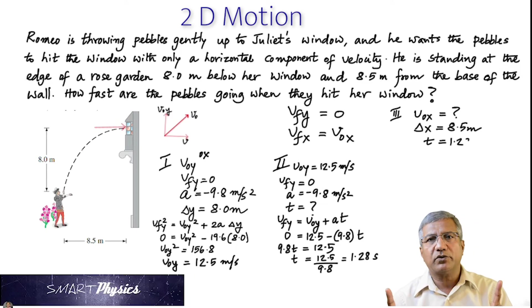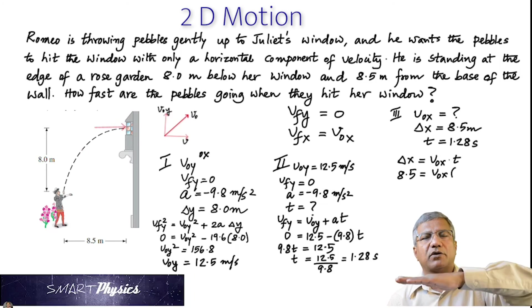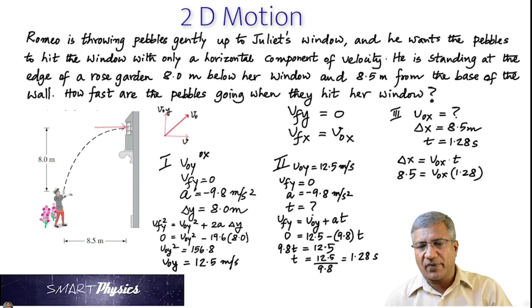And we know that it has to move 8.5 meters along the X because that's how far away Romeo is. So delta X is V0X multiplied by time. Remember, we're using this formula because we know the horizontal velocity is constant. And from there, we can find V0X.